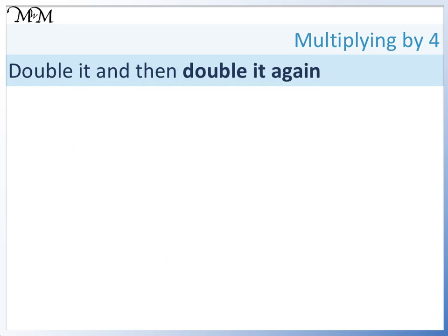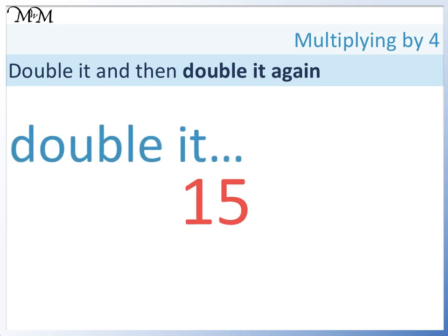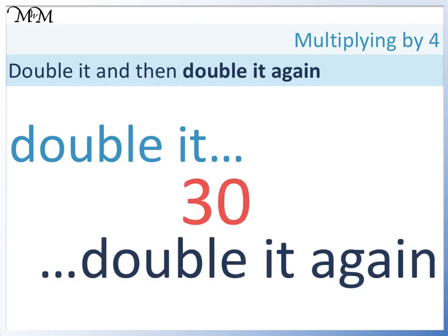So let's try another example with a slightly larger number. This time I want to multiply 15 by 4. So I double it, which gives me 30, and double it again to get 60.